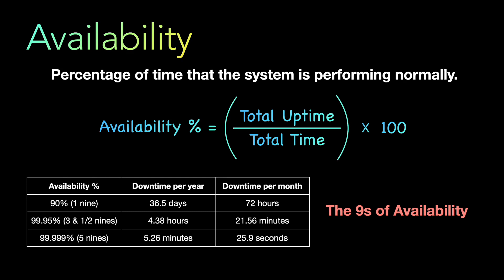Poor availability means the business is not operating normally, which directly results in potential revenue loss. This is why business leaders and stakeholders are highly interested in this metric. So whenever you are designing a system, keep availability in mind. The next attribute is reliability — the probability of a system to perform normally.